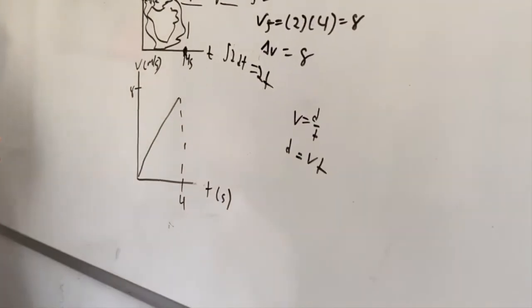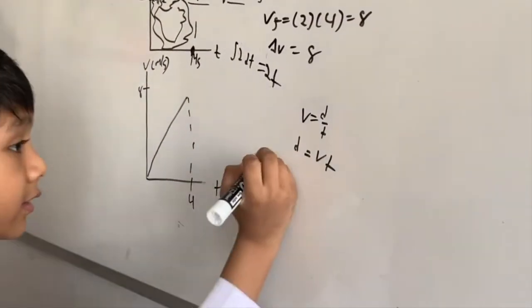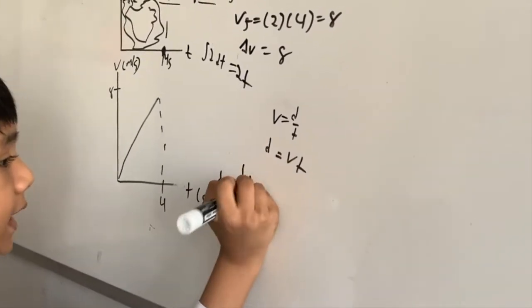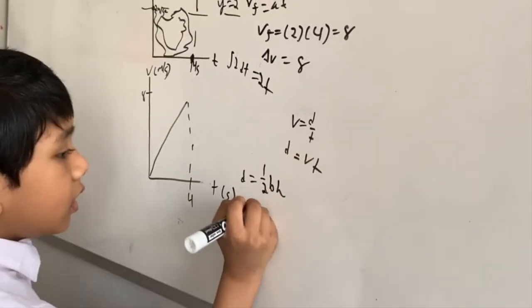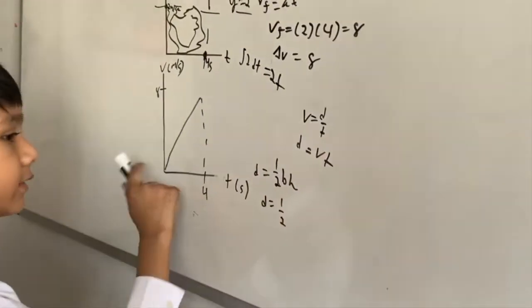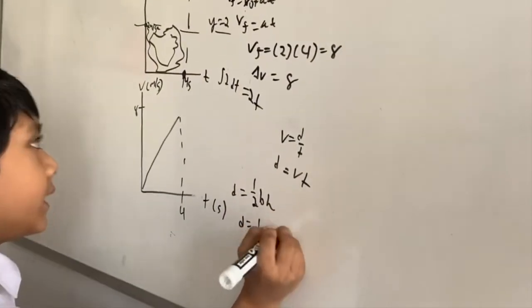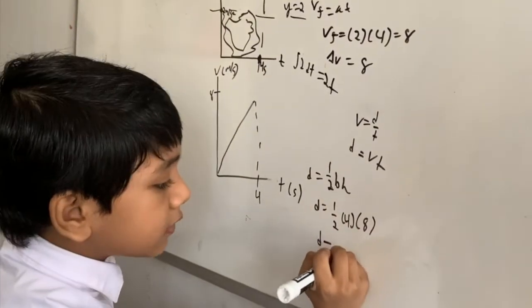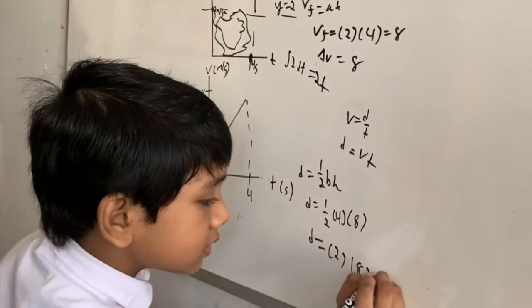This is a triangle, so d = ½ base times height. Half, base is 4, height is 8. However for that, we have our answer: 16.